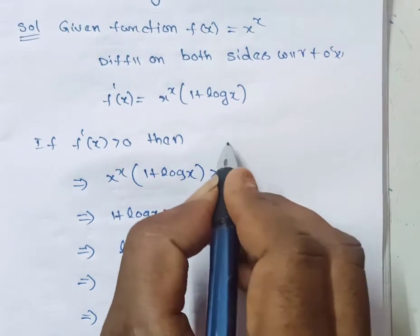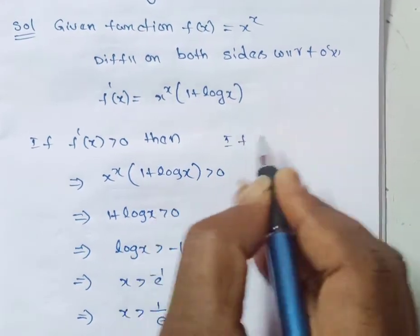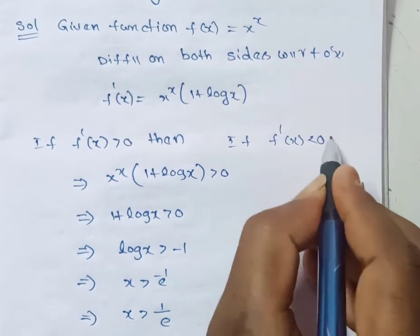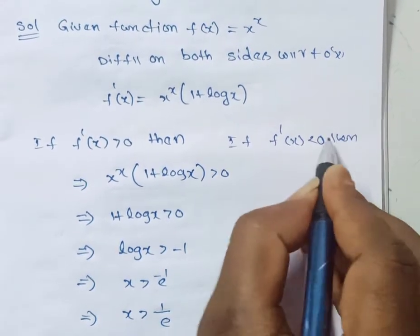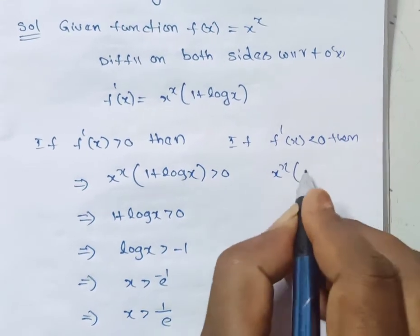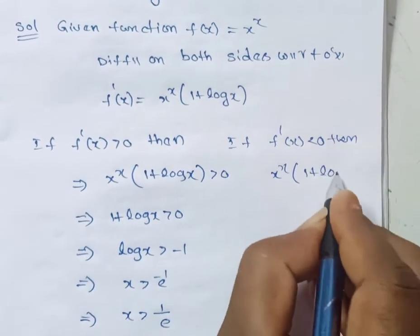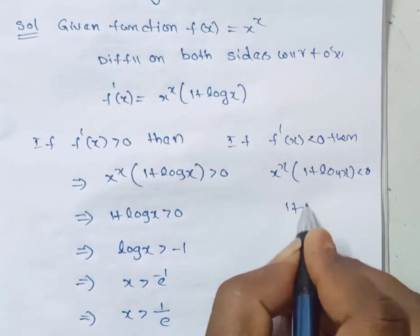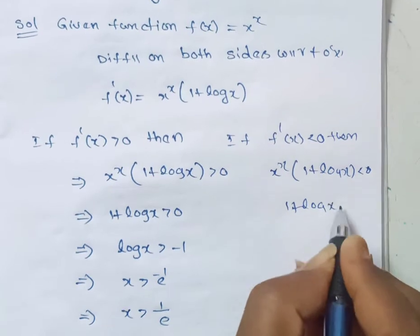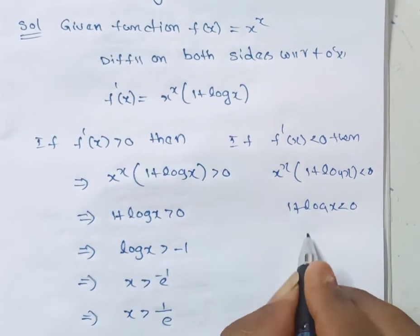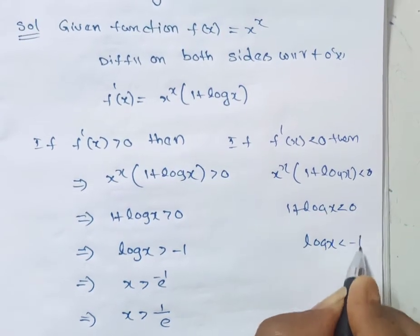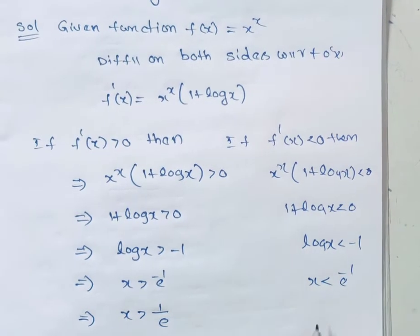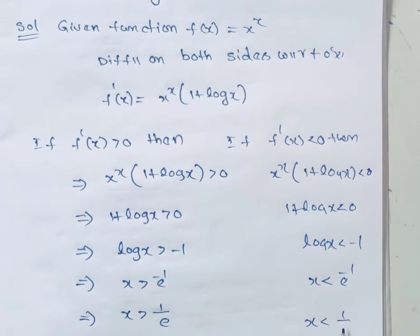If f'(x) is less than 0, then x^x (1 + log x) < 0. Since x^x > 0, we need 1 + log x < 0, which gives log x < −1. This implies x < e^(−1), so x < 1/e.